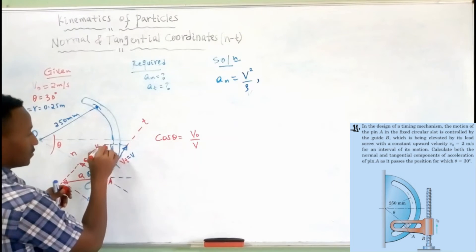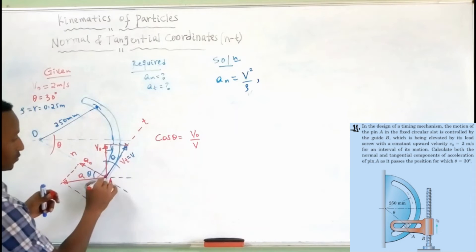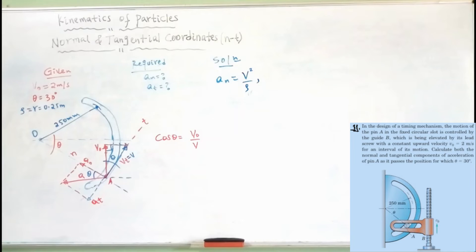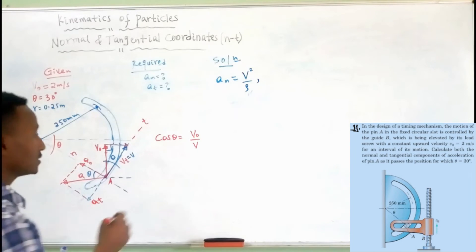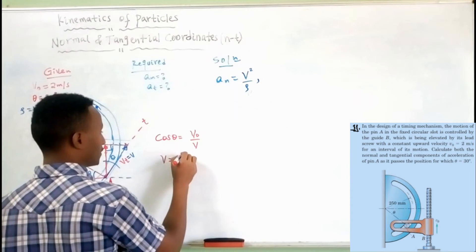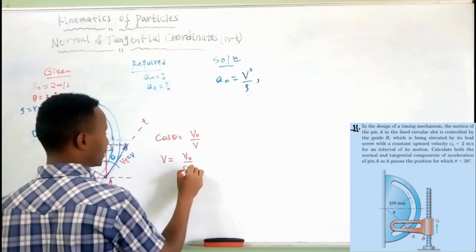Tangential velocity — going to centrifugal velocity, centrifugal acceleration. Calculate in a diagram. Velocity normal, center normal velocity, normal velocity, normal acceleration. In an angle, when v tangential equals v over cos theta.